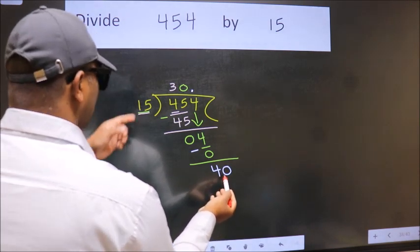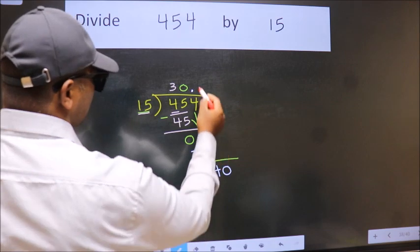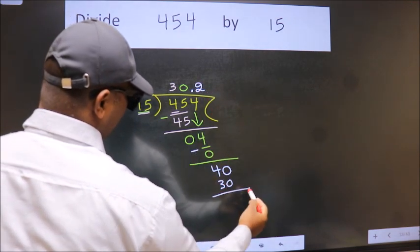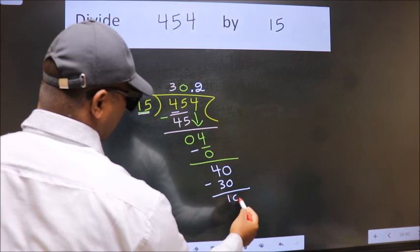A number close to 40 in the 15 table is 15 threes, 30. Now we subtract. We get 10.